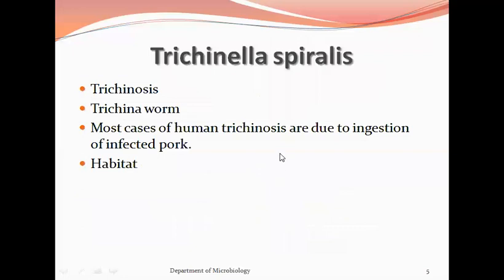First, let's look at Trichinella spiralis, which causes a disease called trichinosis, also referred to as trichina worm disease. Most human cases of trichinosis are due to ingestion of infected pork. The adult worms are found in the mucosa of the small intestine, in the duodenum or jejunum of humans and animals like pigs, bears, and rats. The encysted larvae are present in the striated muscles of these hosts, and there are no free-living stages.